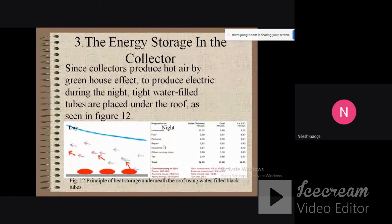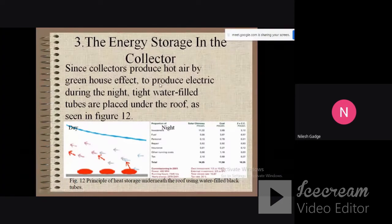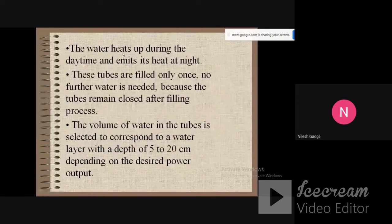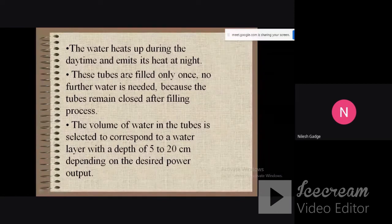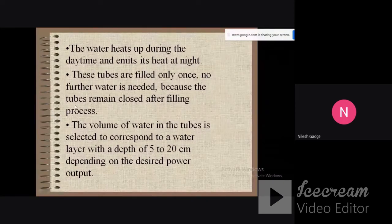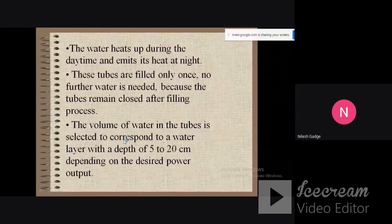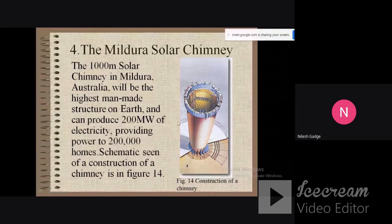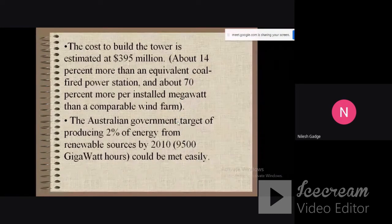The energy stored in the collector is given by this graph. Since collectors produce hot air by greenhouse effect, which is the main thing used in solar chimneys to produce electricity, during the night, water-filled tubes are placed under the roof as shown in the figure. The water heats up during the daytime and emits its heat at night. These tubes are filled only once - no further water is needed because the turbine remains closed after filling. The volume of water in the tube is selected to correspond to a water layer with the depth of 5 to 10 centimeters, depending on the power output. This is a solar chimney situated in Australia.